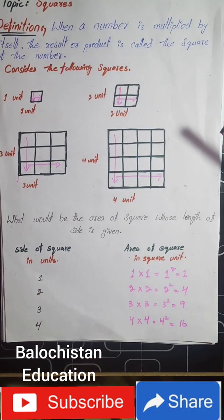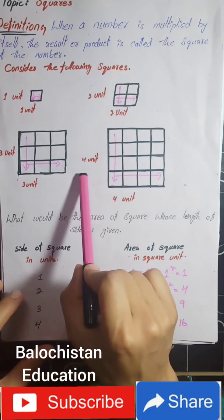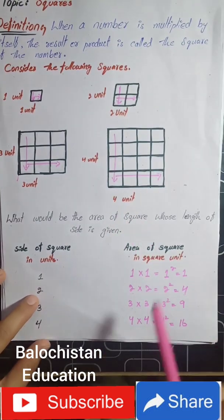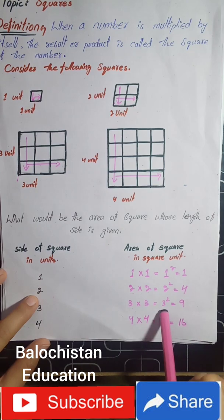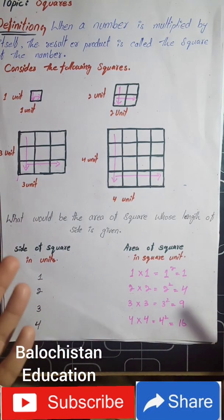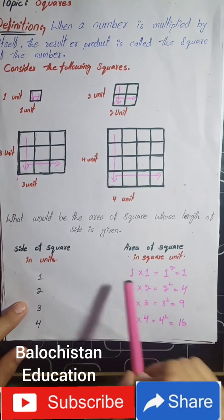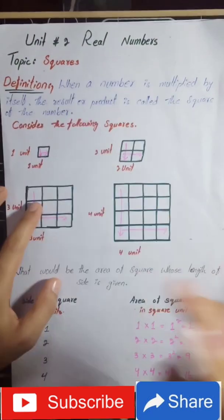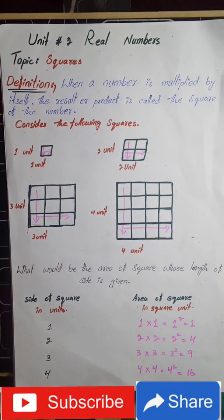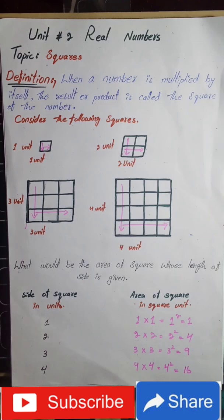This is the way to find the square of any number — simply multiply the number by itself. If it's four, multiply four by four to get four squared. If it's three, multiply three by three for three squared. The same applies to two, one, or any other number like five, six, or seven. Today's topic is complete — hope you understood how to find a square and what a square actually is. Thank you for watching, bye bye.